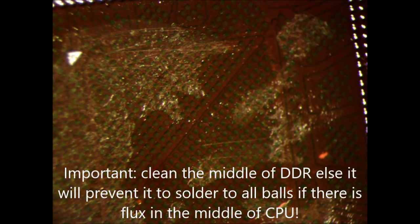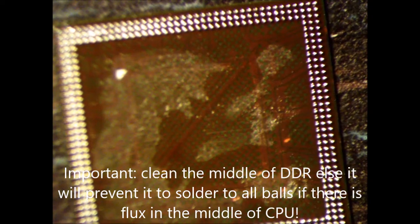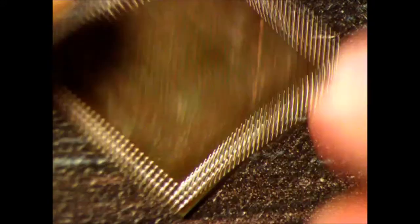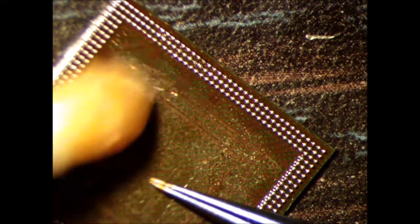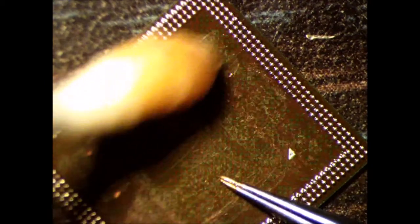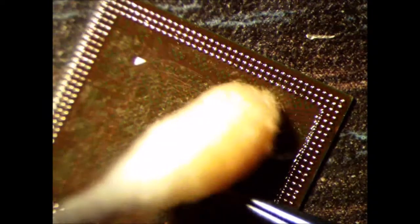And now the last step that you might not know, or maybe some new tool to you, is cleaning the flux from the middle of the DDR. Because if you leave flux in the middle of the CPU and DDR, it will boil and the IC will not solder on all balls. This is a mistake that a lot of technicians do. I have found this problem from the old Nokia ponies, that I should clean the flux from the middle and leave it only where are the balls.